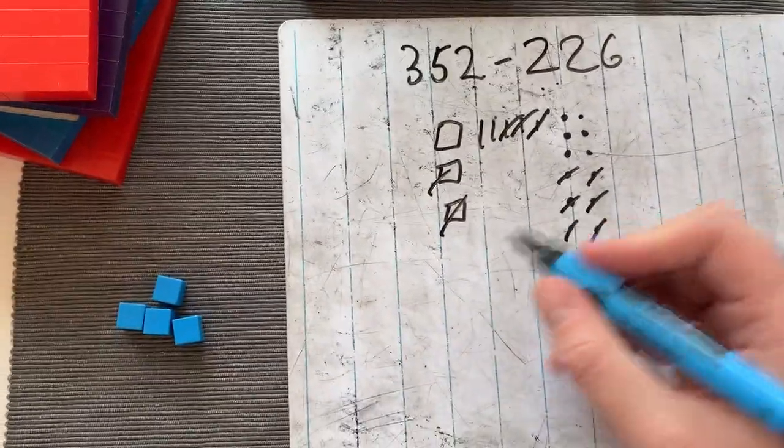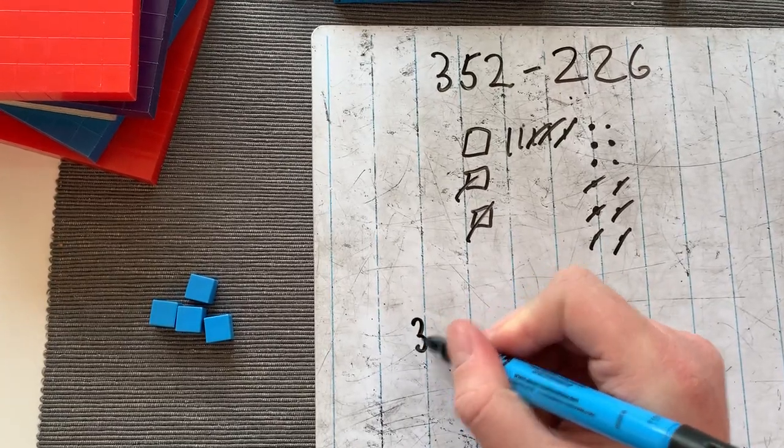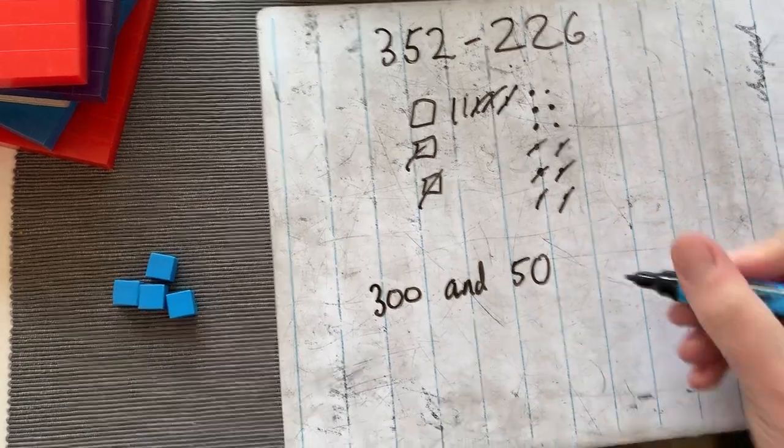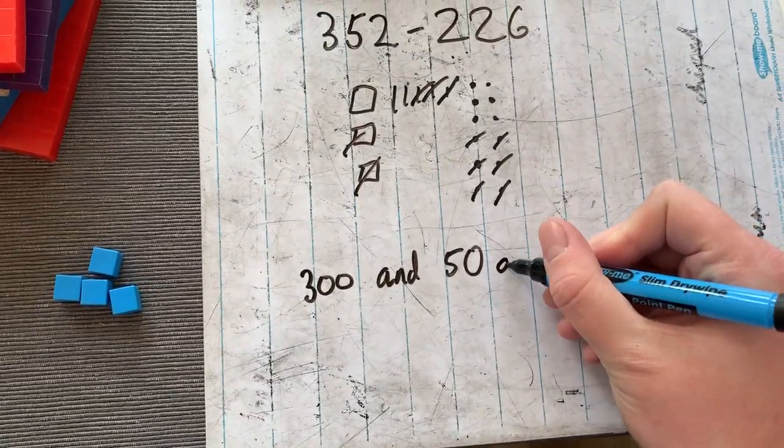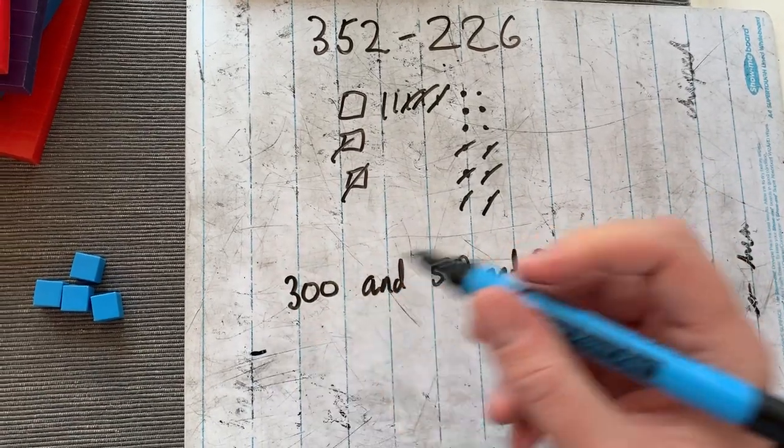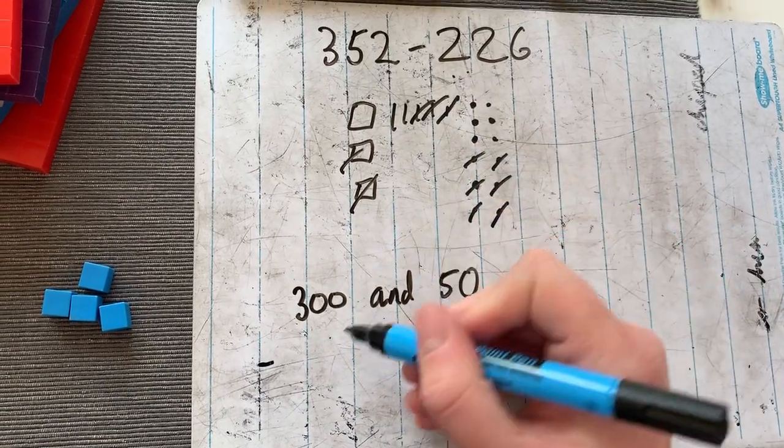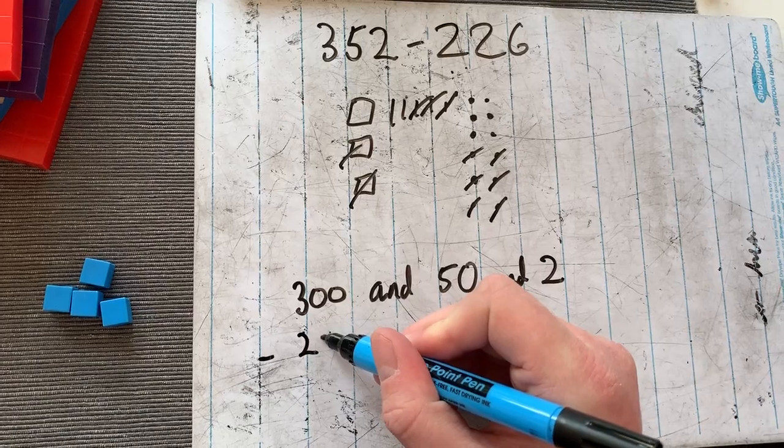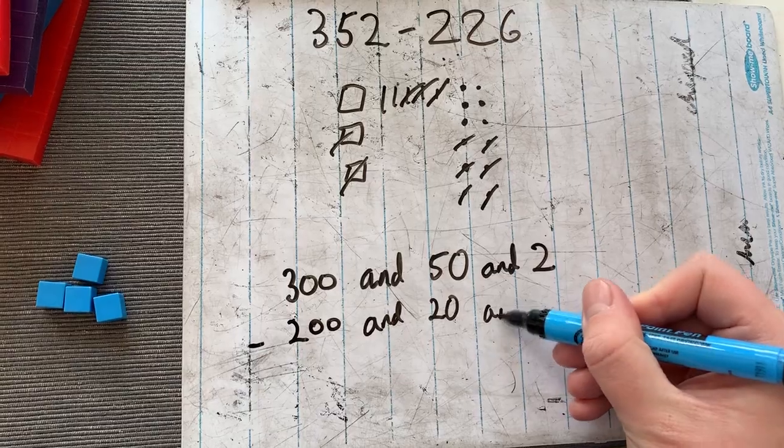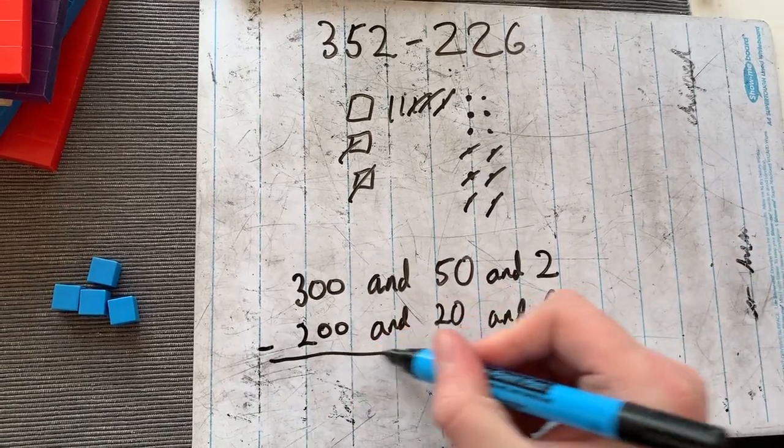Let's write that out. So 300, because we don't want to write plus or we'll confuse ourselves, 50 and 2. And that's minus 226. So minus 200 and 20 and 6. Lovely.